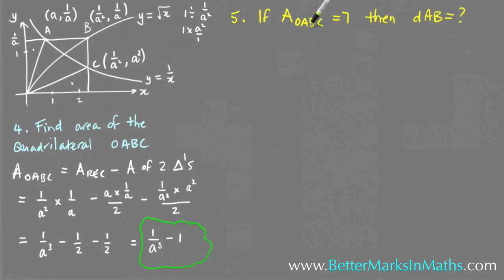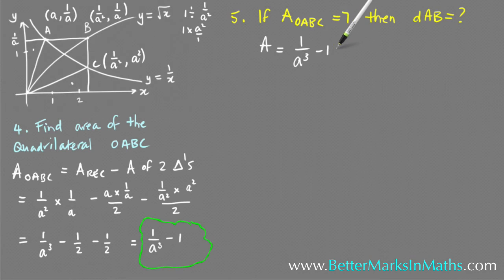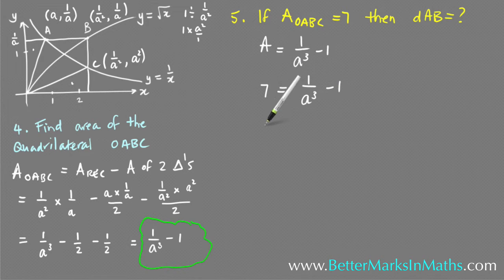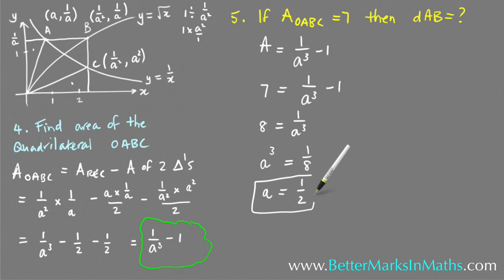In part 5, if the area of OABC equals 7, find the distance AB. Use the result from part 4: area equals 1/a³ minus 1, and you're told the area equals 7. So set 7 = 1/a³ minus 1. Adding 1 to both sides gives 8 = 1/a³, which means a³ = 1/8. Taking the cube root of both sides, a equals 1/2.